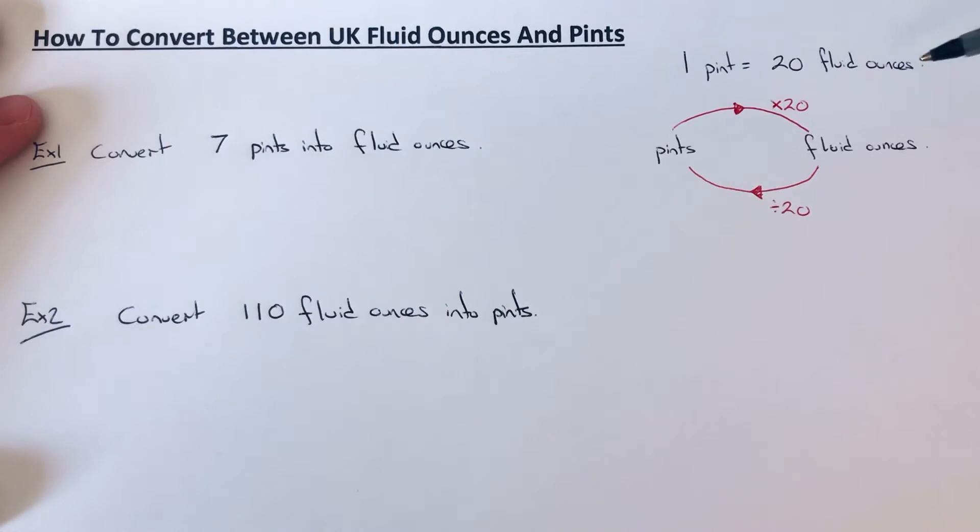20 UK fluid ounces. So if you're changing pints into fluid ounces, you're going to multiply the number by 20. And if you change your fluid ounces back into pints, you will divide the number by 20.